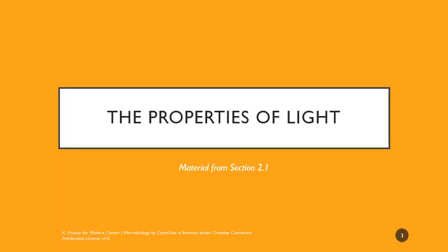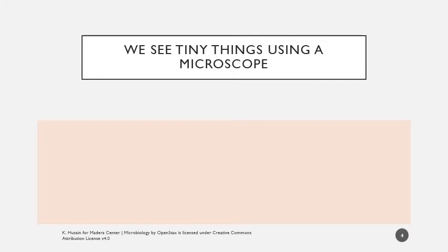Getting into properties of light and general information about microscopy: first, remember that we use a microscope to see tiny things. Anything that is beyond the resolving power of our own eyes, we rely on a microscope to see it and resolve different details about it. So we magnify and then resolve the image using a microscope.